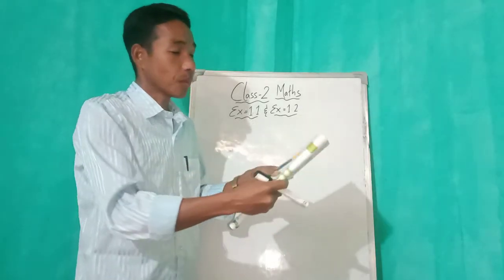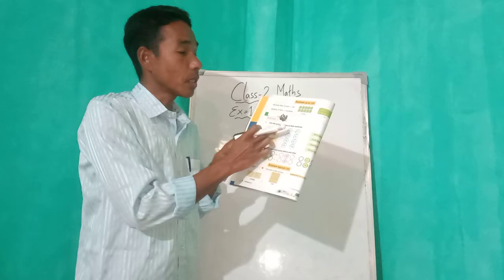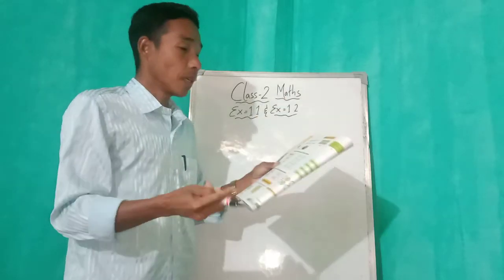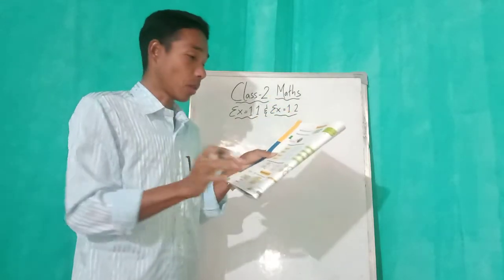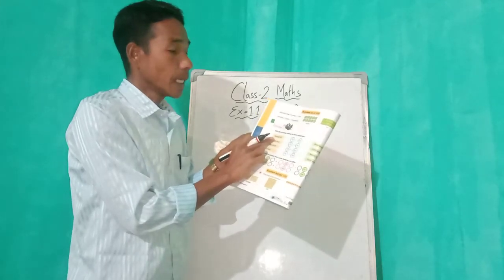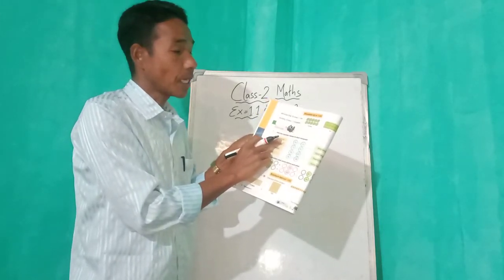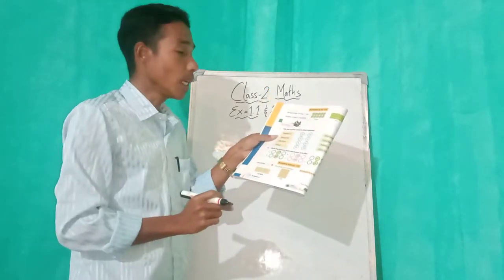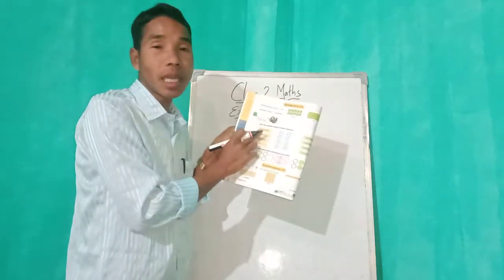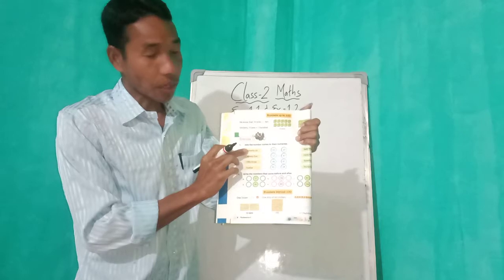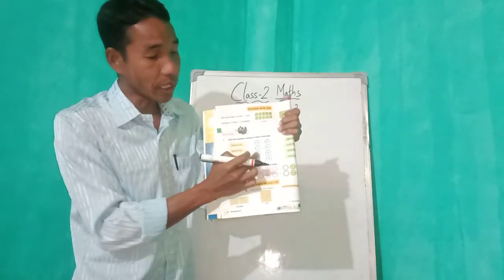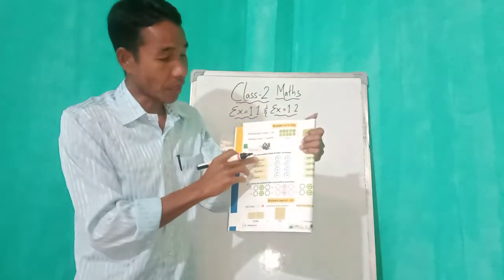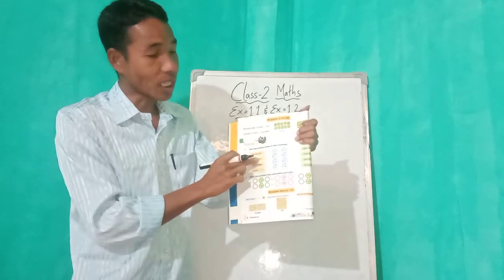Number one: join the number names to their numeral. Numeral means numbers. See here — 60, 66, 76 is given. We have to find 76 and join it. Look here, 76 spelling is given and we have to join it with 76.